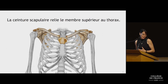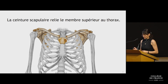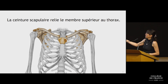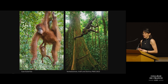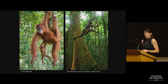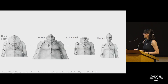The shoulder girdle is a region of the post-cranial skeleton that connects the upper limb to the thorax. It has a few different bones, and the ones I'll be talking about today include the clavicle in the front and the scapula on the back. Because the shoulder connects the upper limb to the thorax, it plays a central role in the way apes climb and swing in the trees.